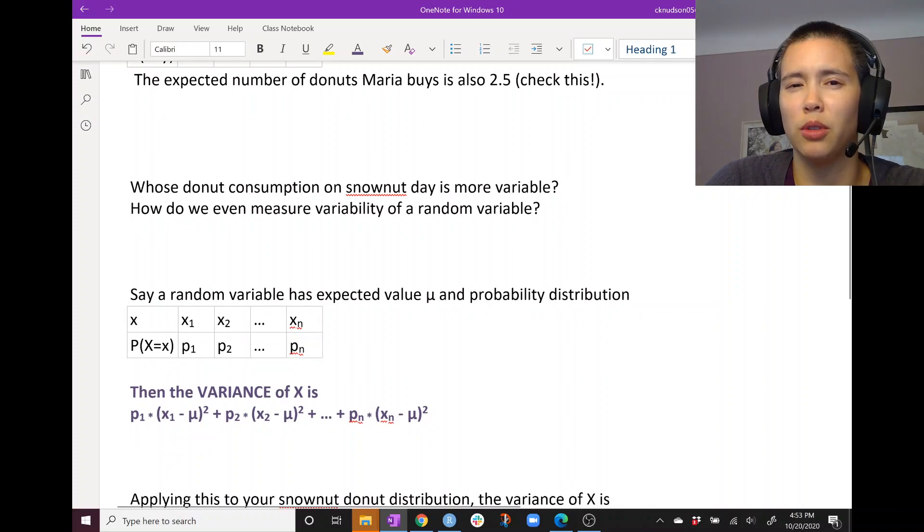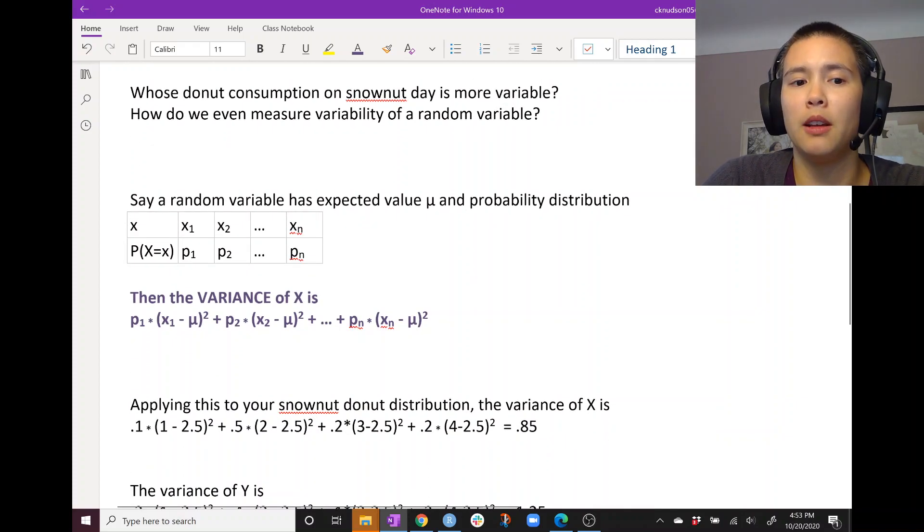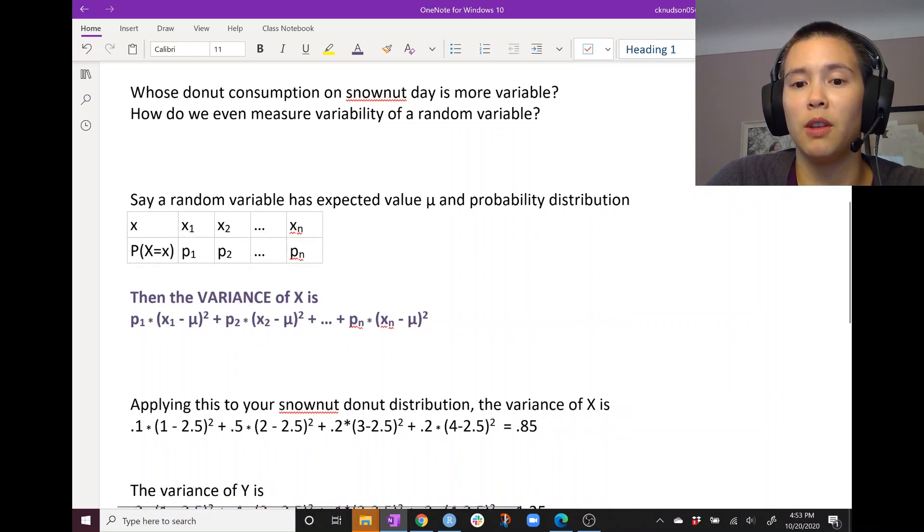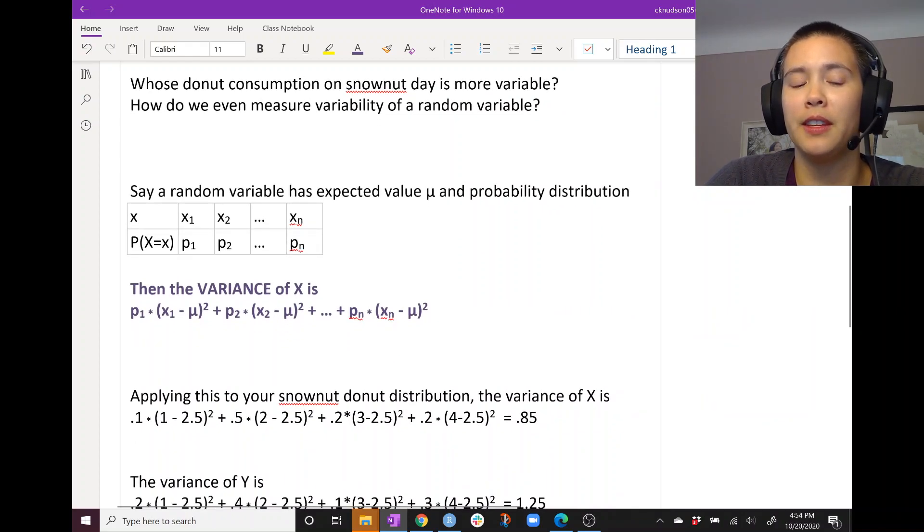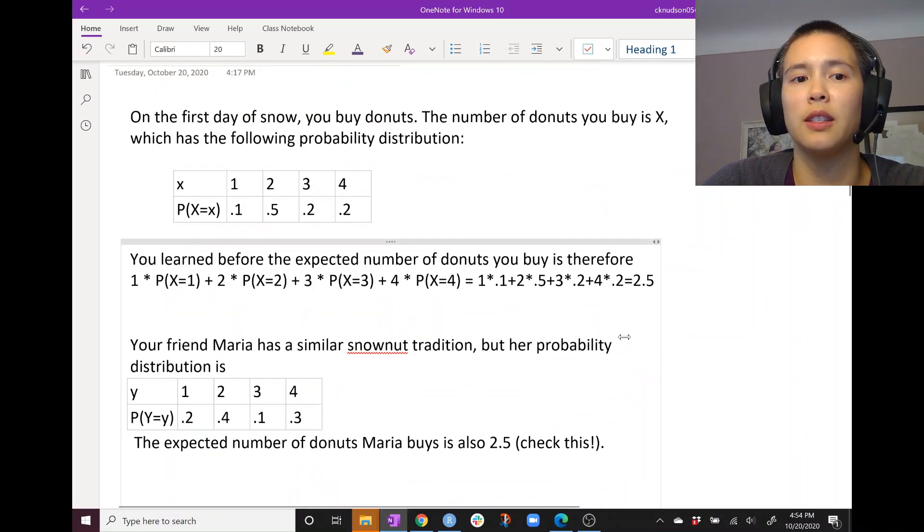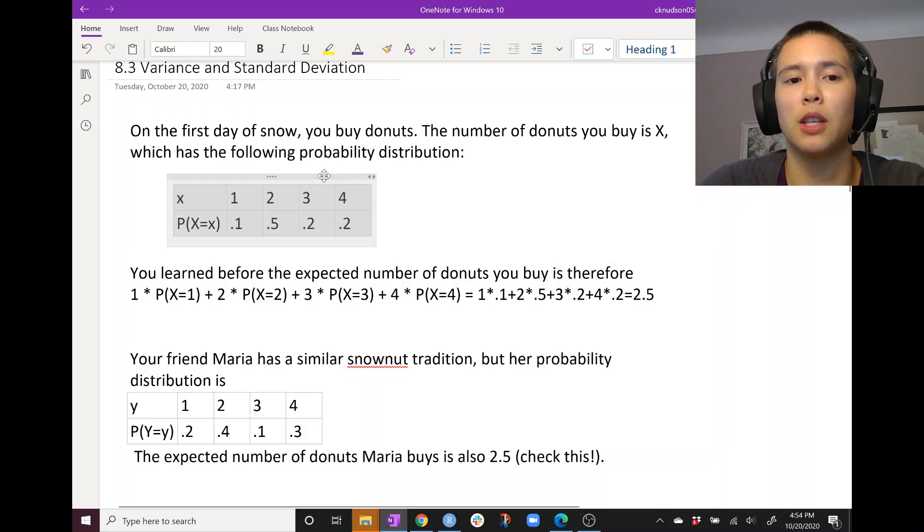Okay, so let's do an example to solidify that. Using our snownut donut distribution, the variance of X for you is, let's go get this distribution here so that we can see it.